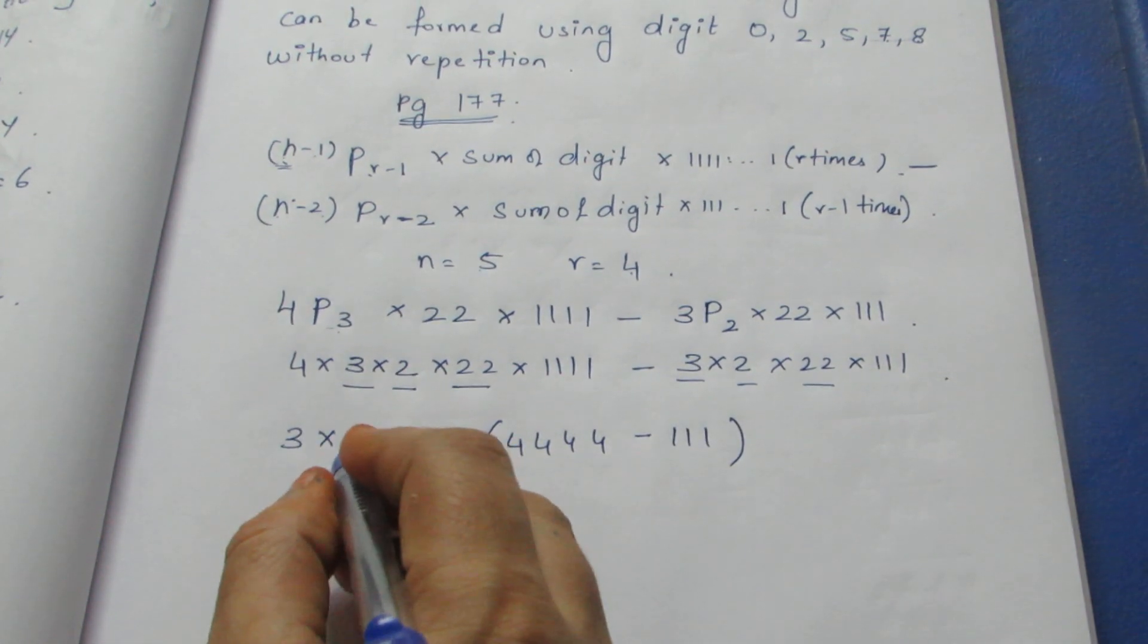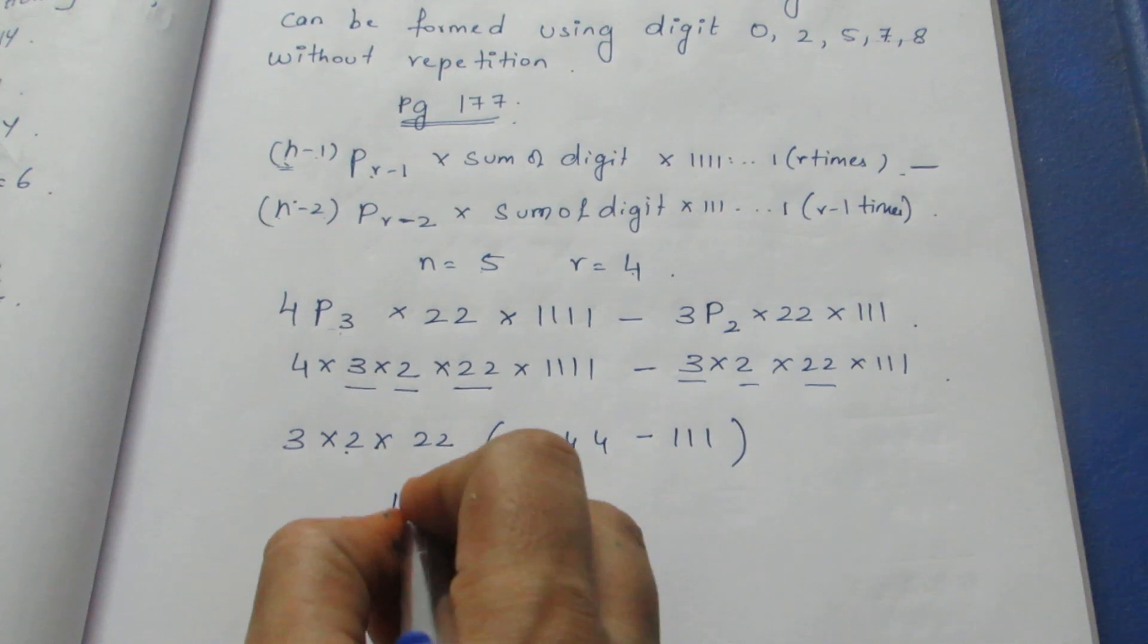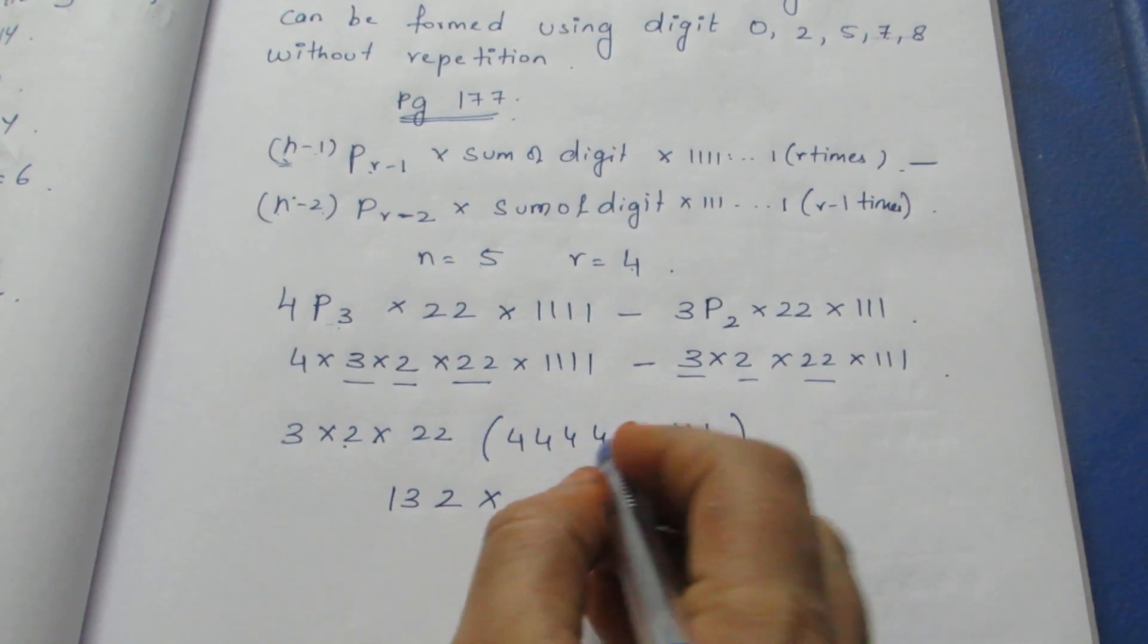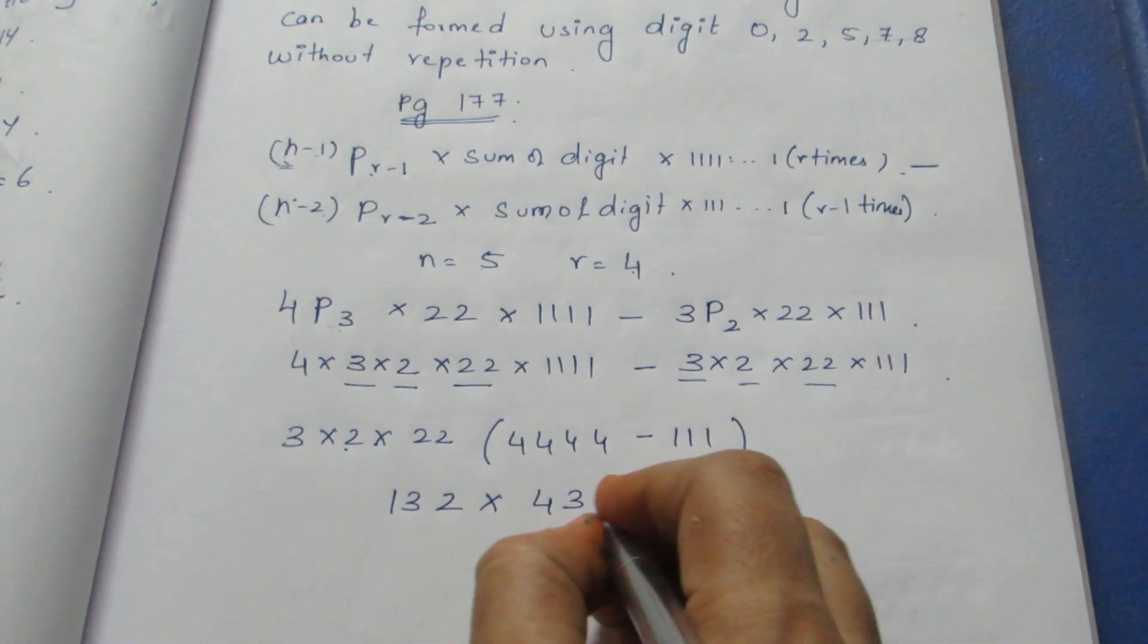So 3 into 2 into 22 into 4444 minus 111. I'll multiply this: 2 into 6 is 12.